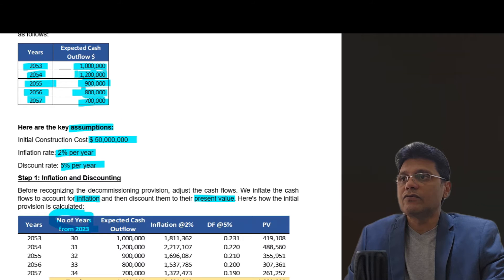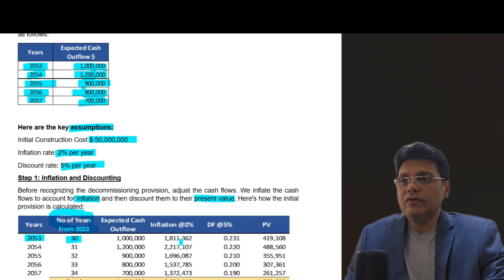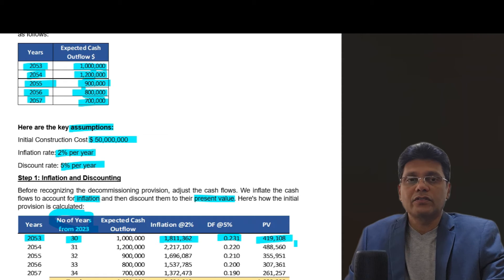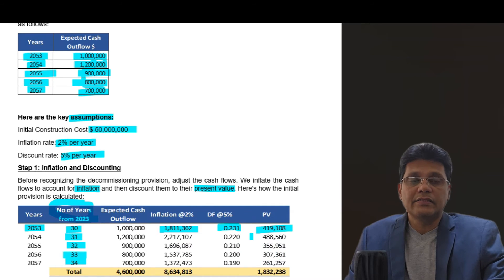In order to calculate the present value of these future cash flows, which are going to be incurred from 2053 onwards, from 2023 to 2053 is 30 years. The expected cash flow of 1 million needs to be inflated at the rate of 2% until 2053. This gives the cost you have to pay in 2053 including inflation. When discounted, the present value in today's terms is 419,108. Likewise, for 1.2 million down to 700,000, take the respective period, inflate, then discount back to today's value using a discount factor at 5% to the power of 30.